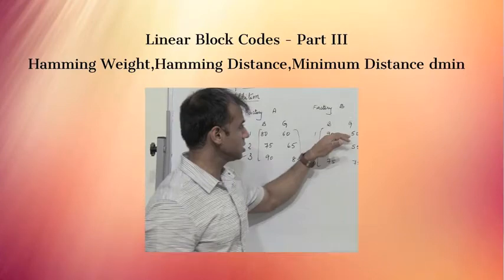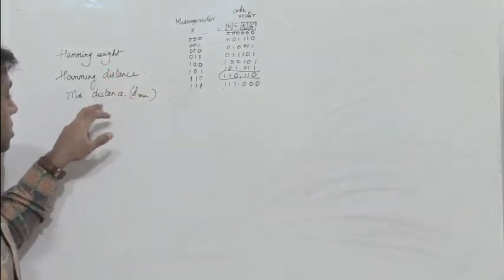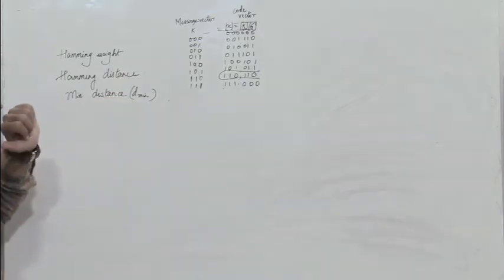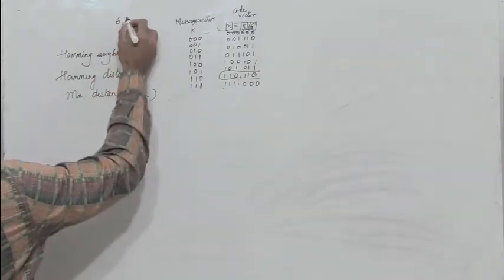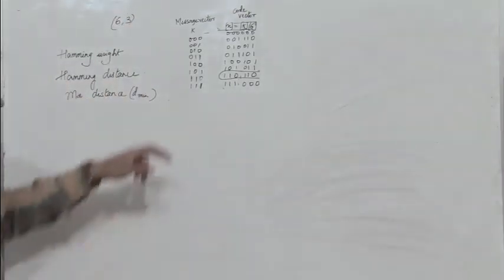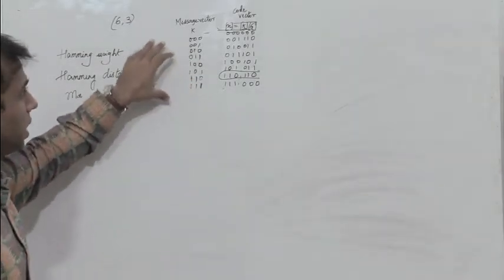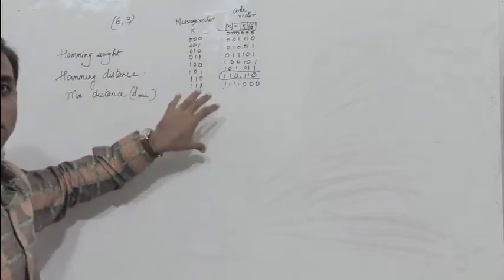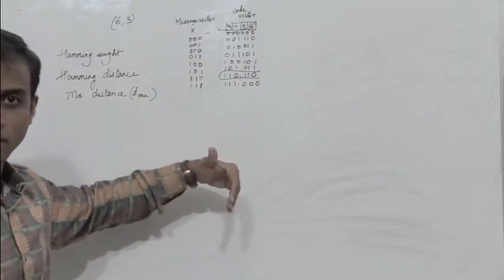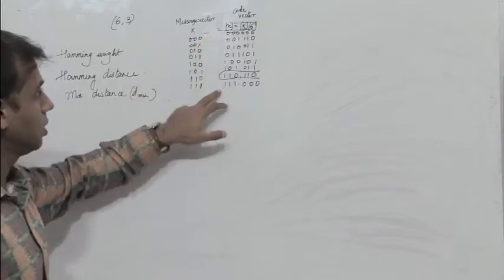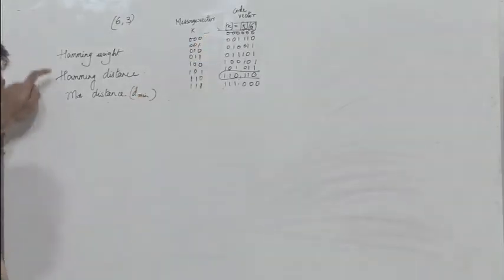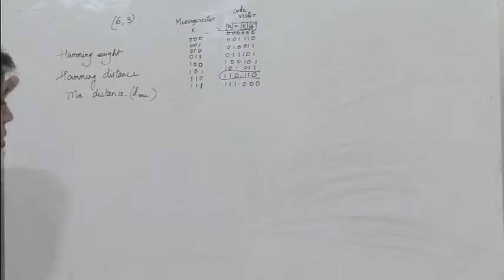Let us try to understand what hamming weight, hamming distance, and minimum distance are. Here I have considered a systematic linear block code. We have defined the message vectors from 0,0,0 to 1,1,1 and multiplied the message vector with the generator matrix used in the previous lecture to get the code words. Now we need to find out the hamming weight, hamming distance, and minimum distance.